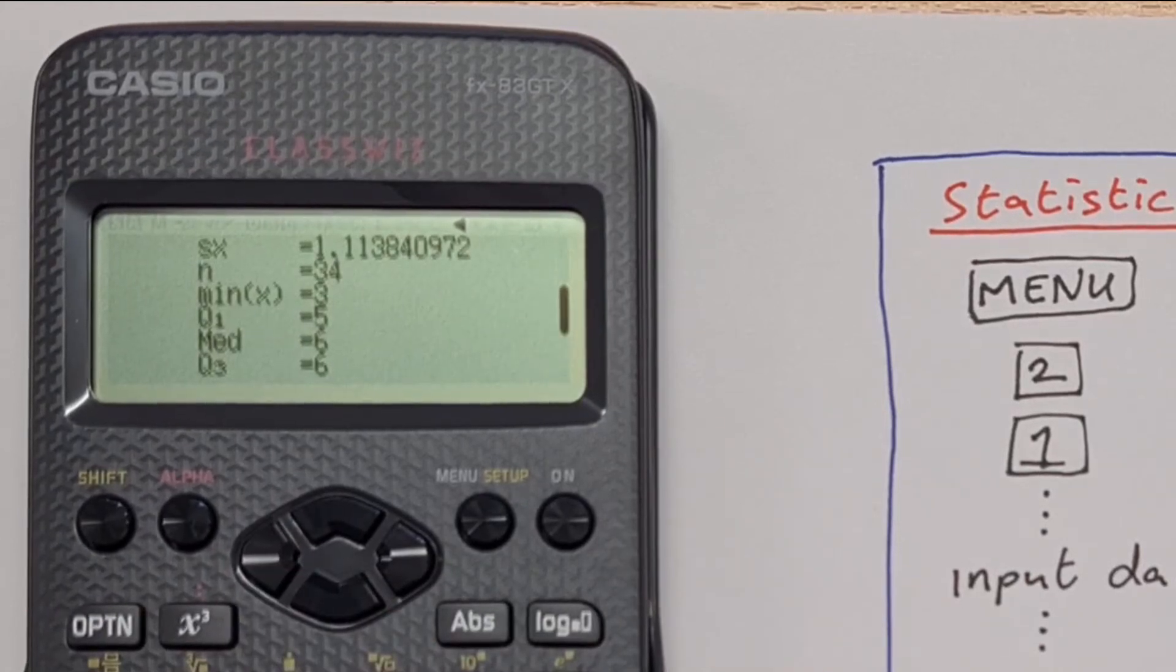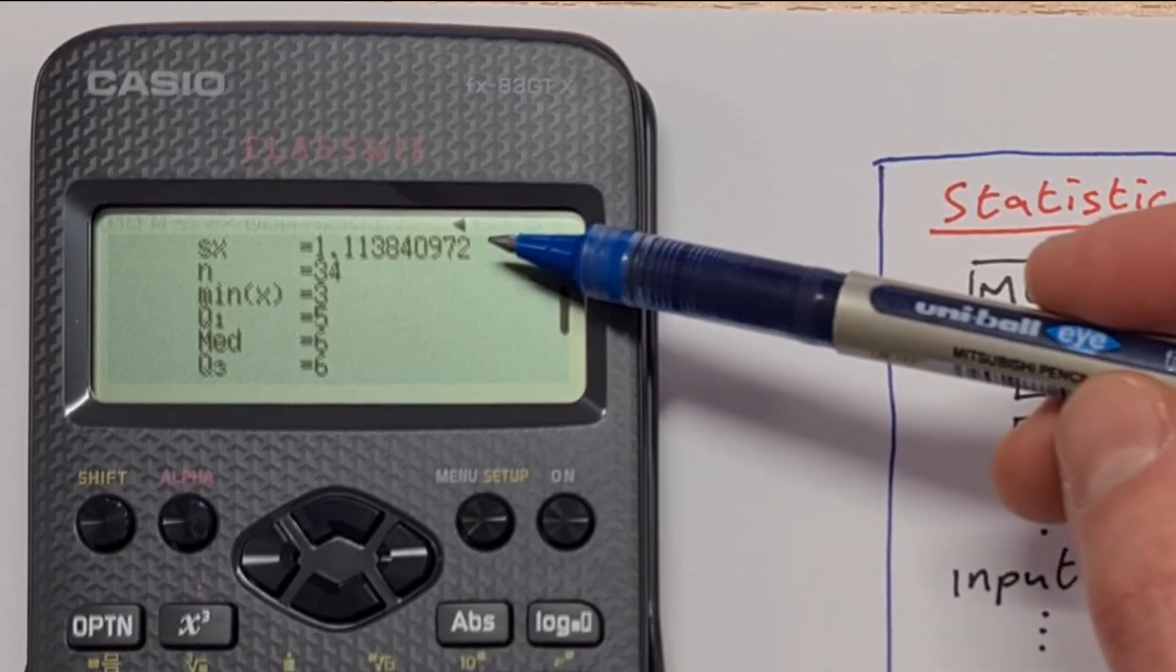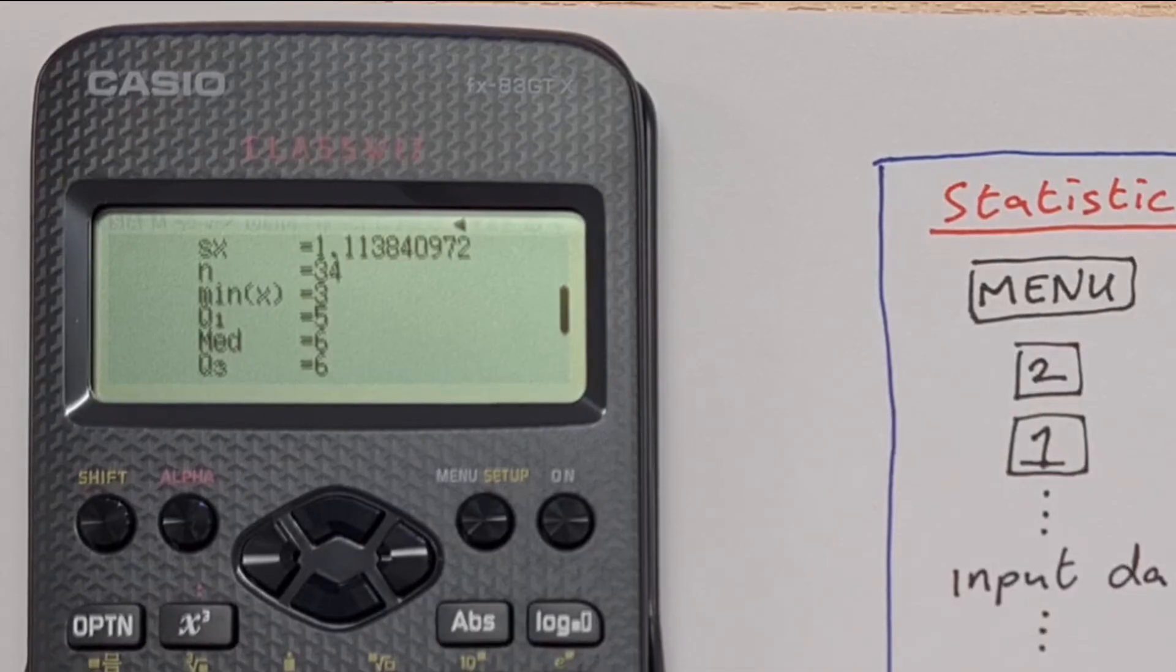We can press down here to get some more information here. The sample standard deviation, S of x, is 1.11. This is a slightly different standard deviation depending on what one you want to use.